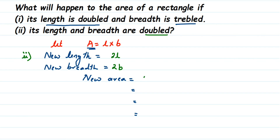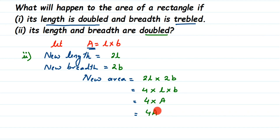New length is 2l multiplied by new breadth 2b. Multiplying the numbers: 2 times 2 is 4, into l into b. We know length into breadth is area, which we have taken as A. So the new area is 4 into A, or 4A. If the length and breadth are both doubled, the new area is 4 times more than the actual area.